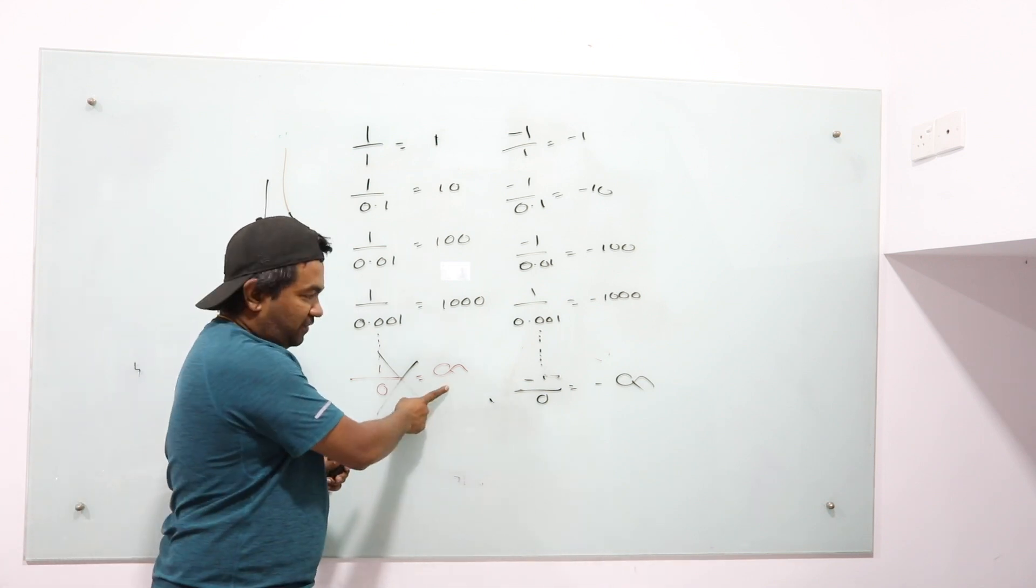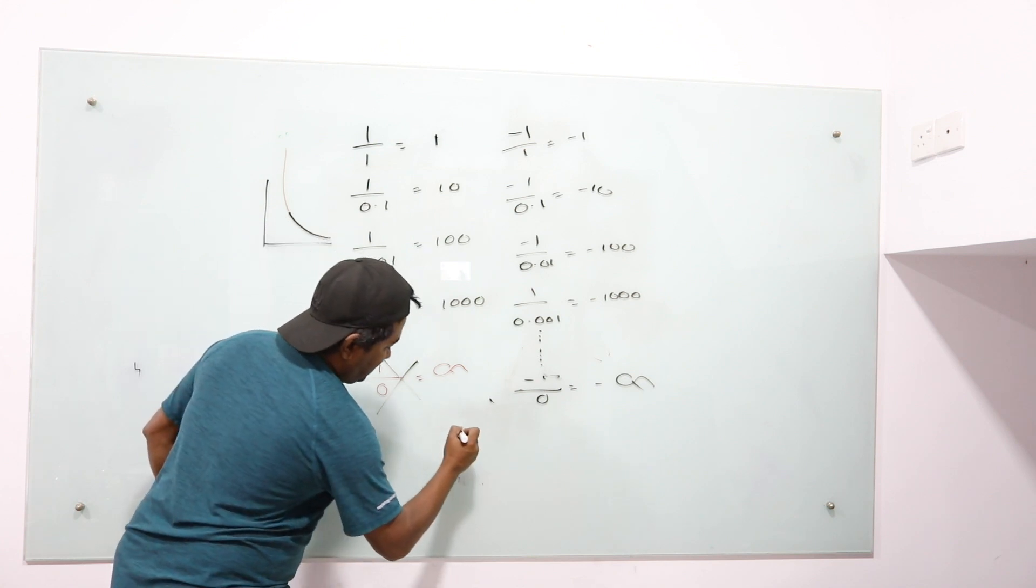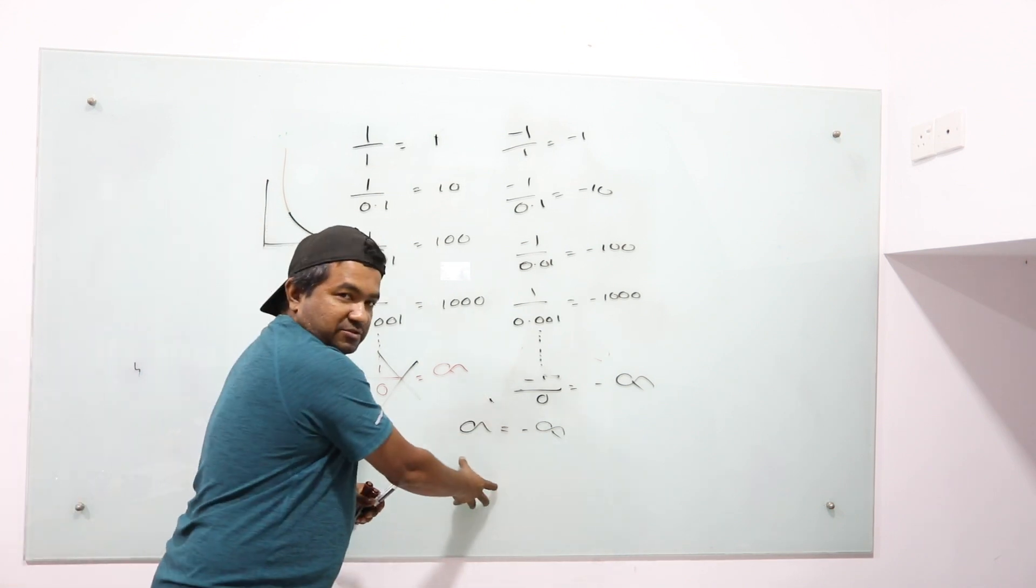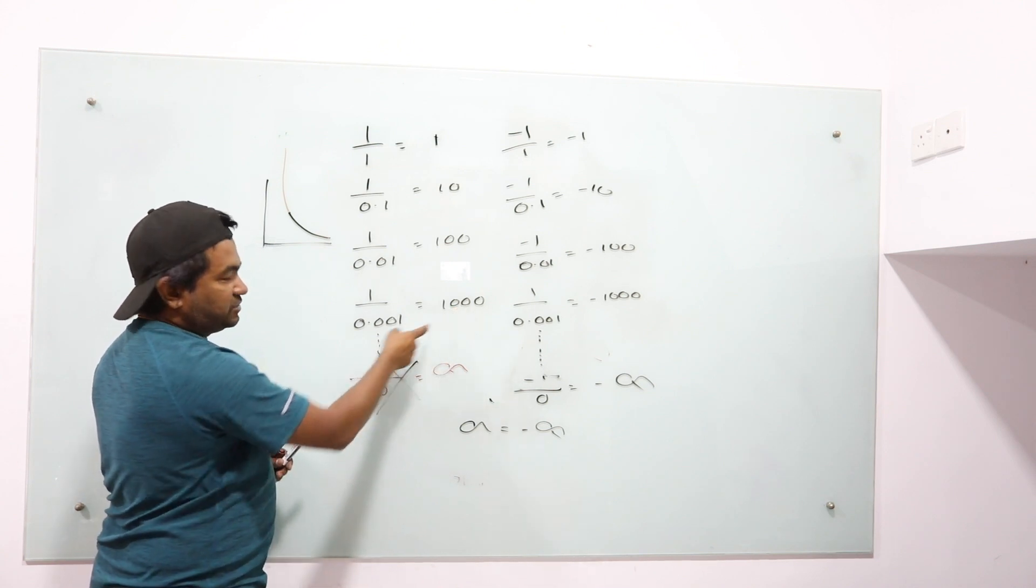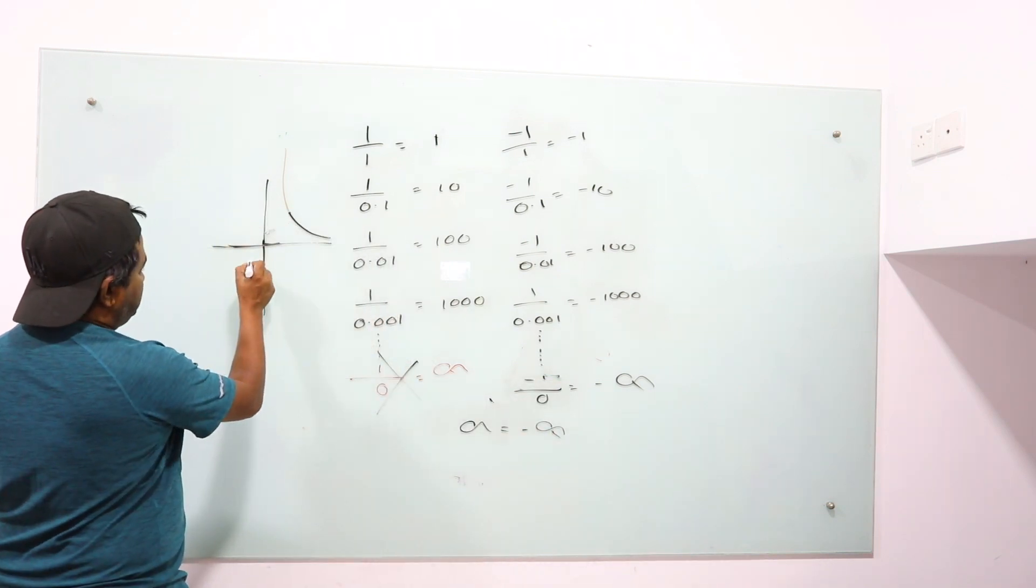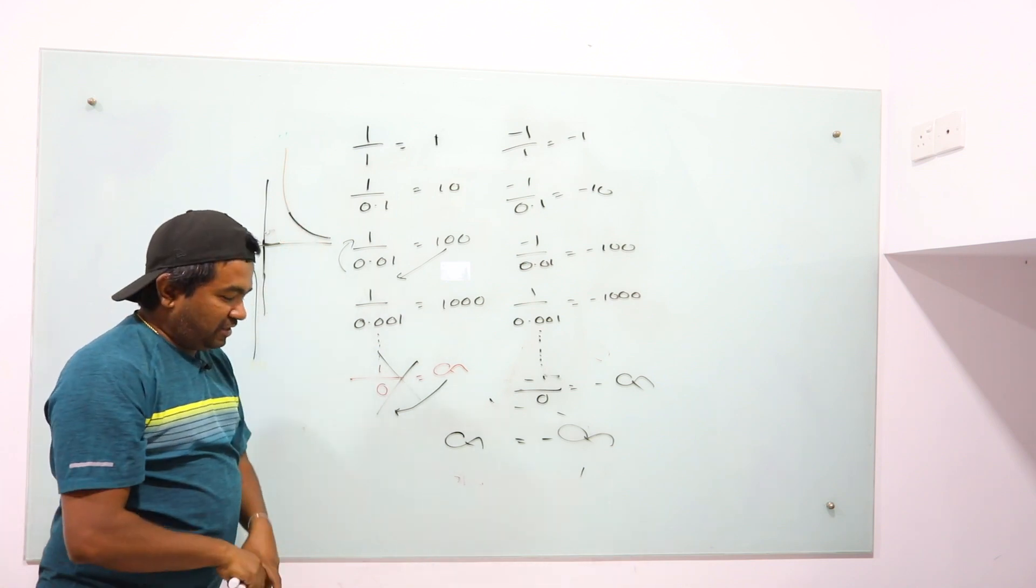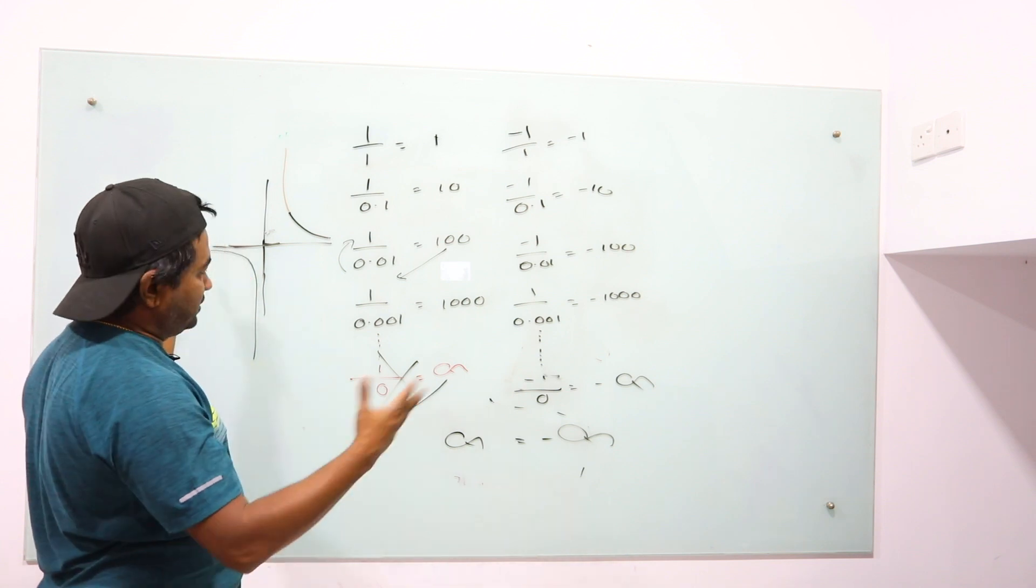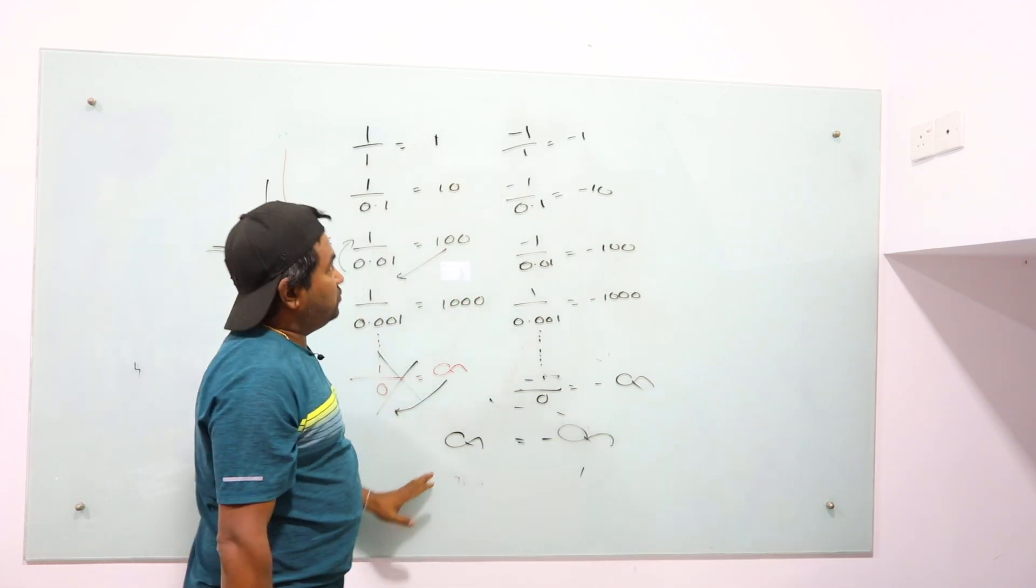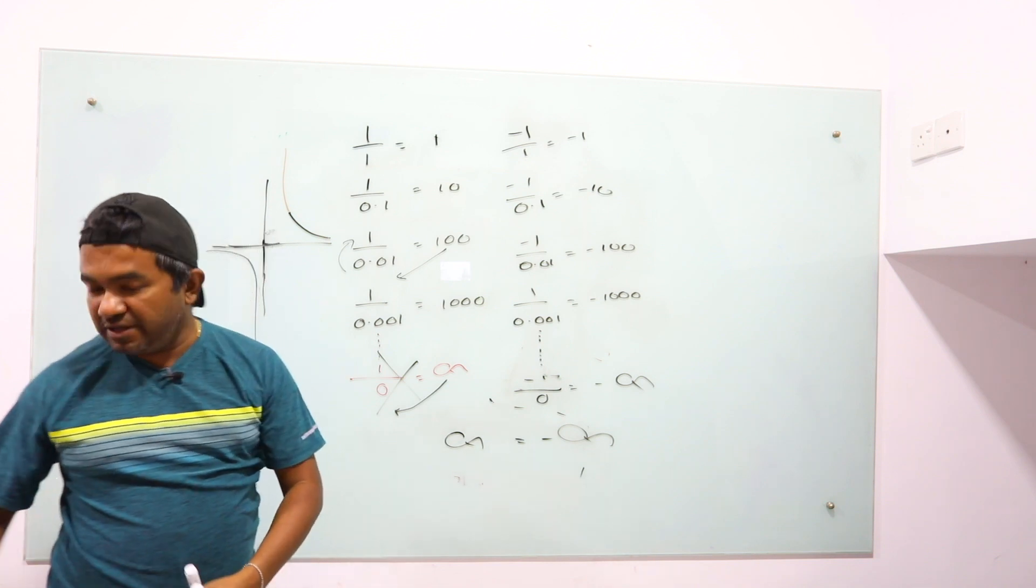So now what happened? 1 divided by 0 is infinity. Minus 1 divided by 0 is negative infinity. So now it becomes infinity equals negative infinity, which is again not true. If you apply the same logic, if you do this in the same diagram, you will see when you're trying to go towards 0, it's going the other way around. You can see these two are never going to meet each other at all, because these go in two different ways.